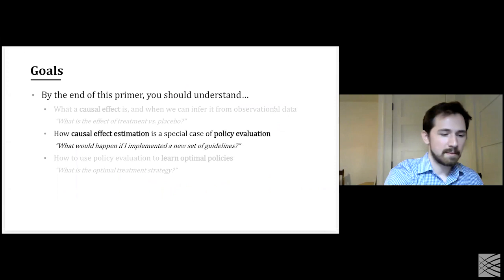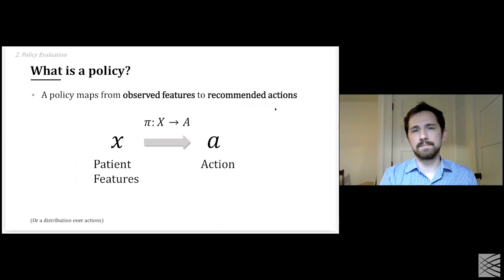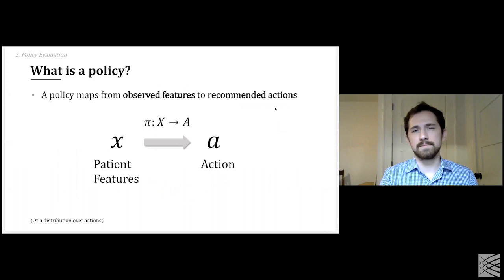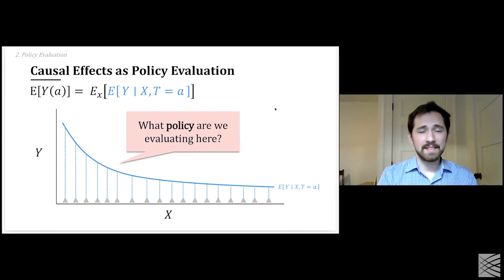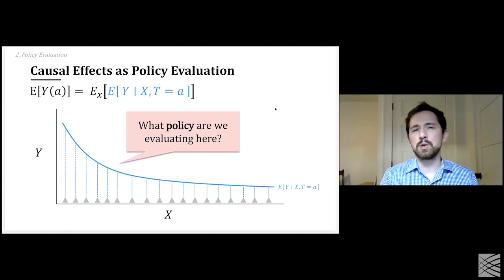Now I'll talk about policy evaluation. First, what is a policy? A policy maps from observed features of the data to recommended actions. We can think of this as a function pi which does this mapping — we can think of deterministic policies where you give patient features and a recommended action is returned. In this setting, this particular causal effect — the average potential outcome — is actually giving you the value of a particular policy.